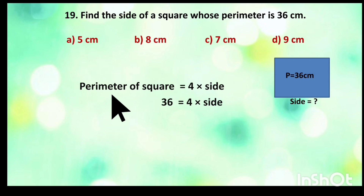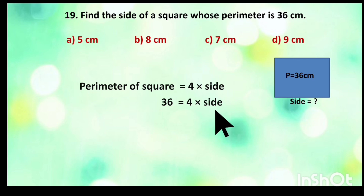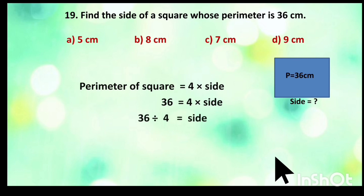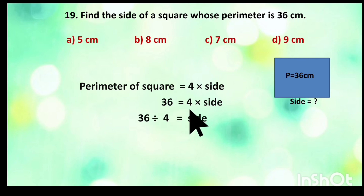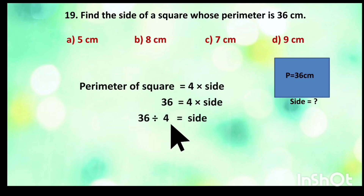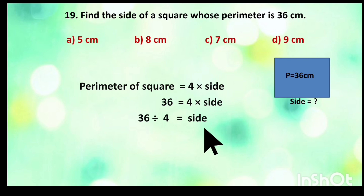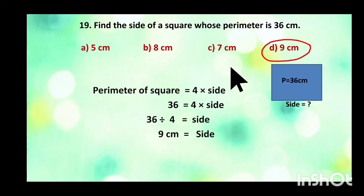Therefore, perimeter of square is 36. So 36 equals 4 into side. We are asked to find the side of the square. This 4 will come to the other side — as it is in multiplication on the left hand side, when it comes to the right hand side it becomes division. So 36 divided by 4 gives the side of the square. The answer will be 9 cm. So the side of the square is 9 cm.